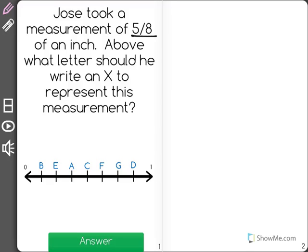Jose took a measurement of 5 eighths of an inch. Above what letter should he write an x to represent this measurement? So we know that Jose found something that was 5 eighths of an inch.